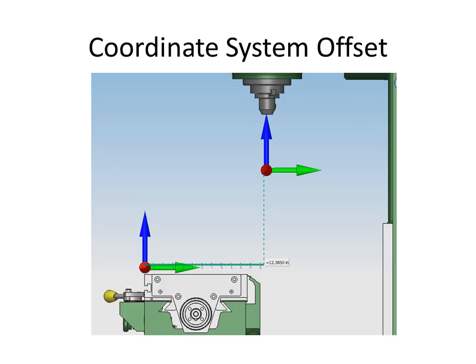The machine tool keeps track of where the program coordinate system is with a coordinate system offset. This is the distance that your coordinate system is from the coordinate system built into the machine. It's the distance in the X, Y, and Z of your coordinate system from the machine's coordinate system.